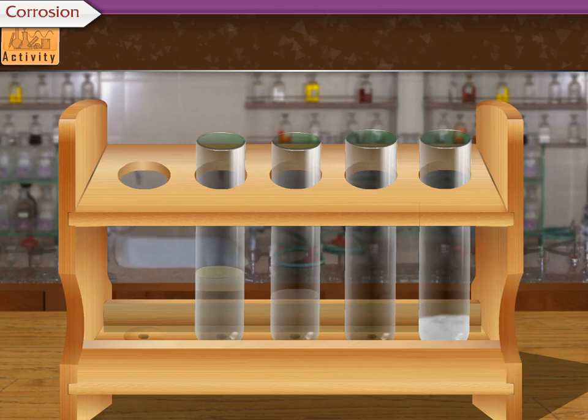Now, in each test tube, let us place a small iron nail. Close the fourth test tube with a rubber cork. Keep all the four test tubes unattended for a few days.